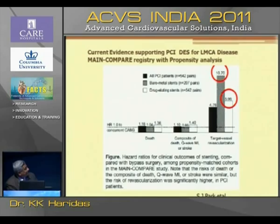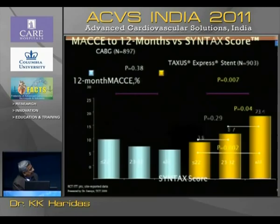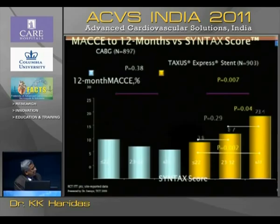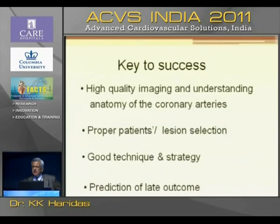Drug-eluting stents are certainly superior to bare metal stents. I want to use one slide from the Syntax study to tell you that you need to select your cases very well. If you have a low or medium Syntax score, you find no difference in 12-month MACE between the stent arm and the surgical arm. However, in the high Syntax score group, there is a significant difference favoring surgical outcome. So to get a good result on the left main, you have to use the Syntax, Parsonet, or Euro scores.